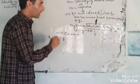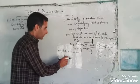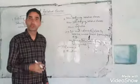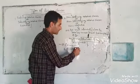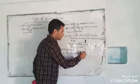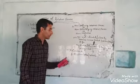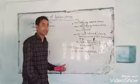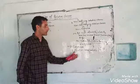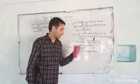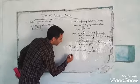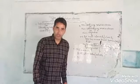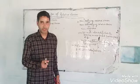In non-defining relative clauses, we do not use 'that' as a relative pronoun. Instead, we use 'who' for people and 'which' for things. In defining relative clauses, we often use 'that,' but in non-defining relative clauses we use 'who' for people and 'which' for things. Commas are very important in non-defining relative clauses in order to separate important information from the extra information.